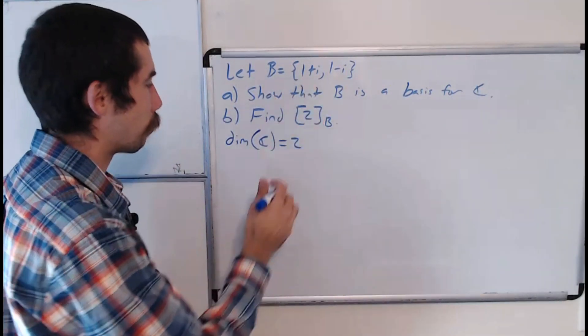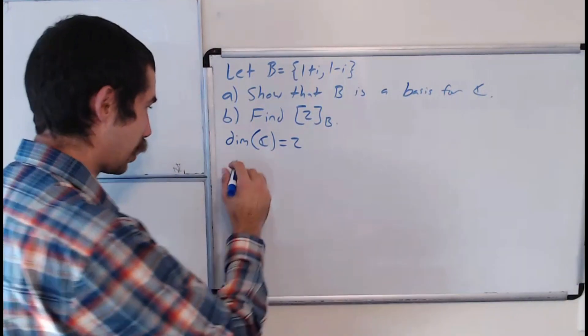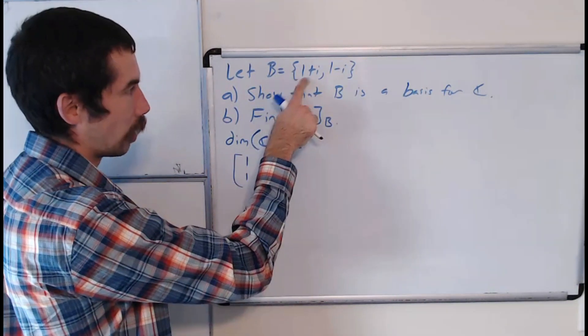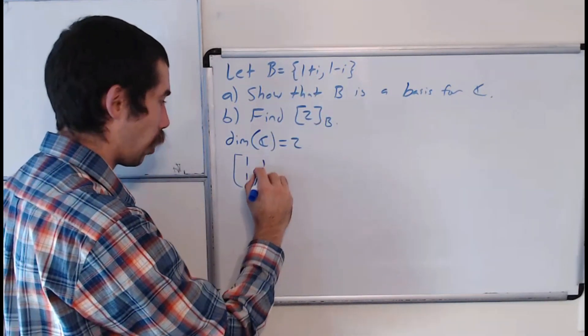One way we could do that is to write their coordinate vectors with respect to the standard basis. So the first one would be [1, 1] — 1 for the real part and the coefficient of i is also 1 — and the next one would be [1, -1].